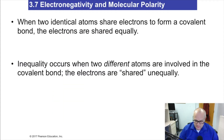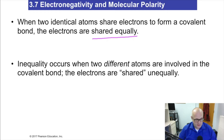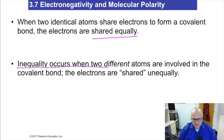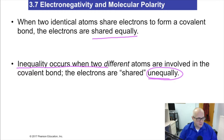When two identical atoms share electrons to form a covalent bond, the electrons are shared equally — it's an equal sharing. Unequal sharing occurs when two different atoms are involved in a covalent bond, and those electrons are shared unequally.